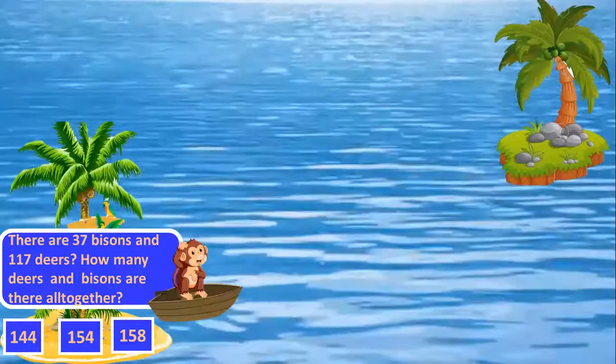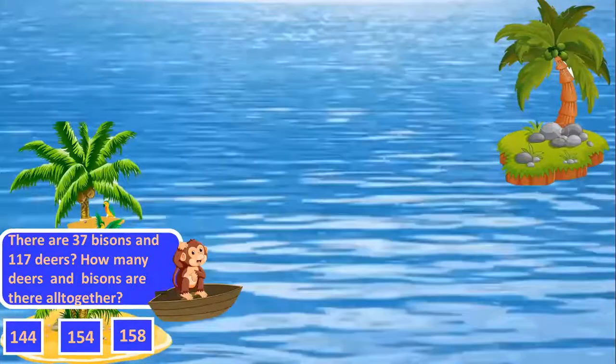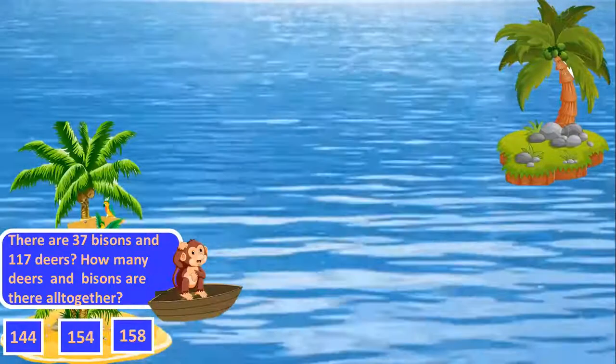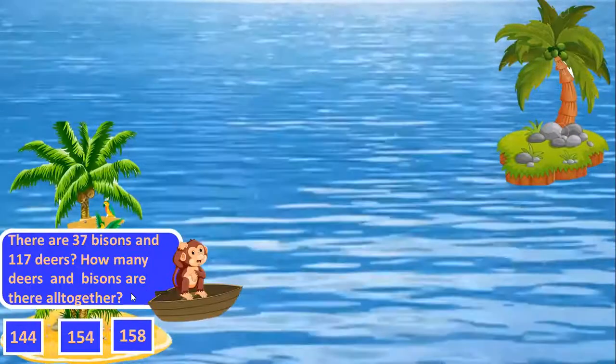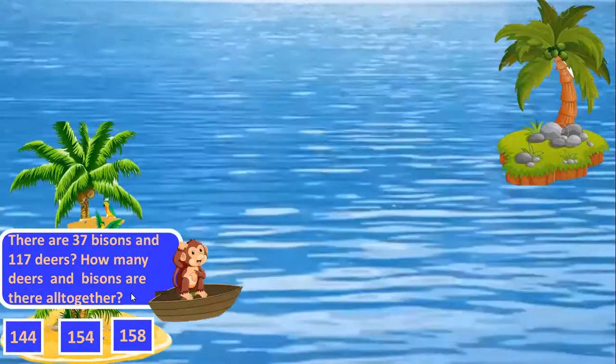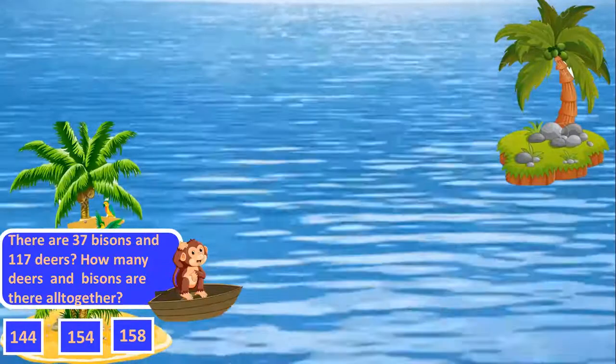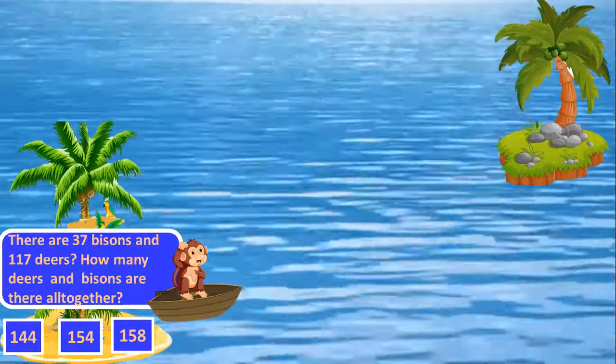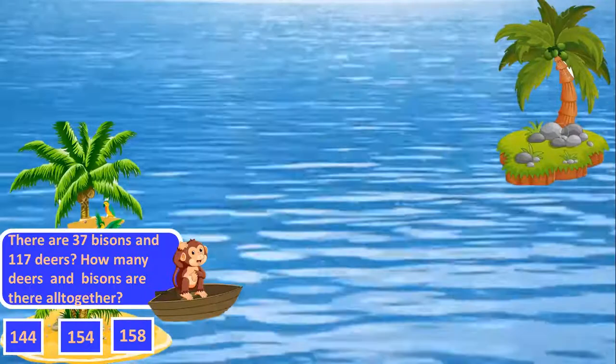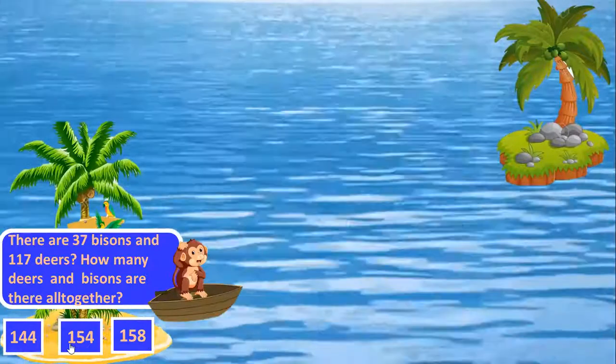There are 37 bisons and 117 deers. How many deers and bisons are there all together? All together means we need to add. So while adding we will get 154. Very good.